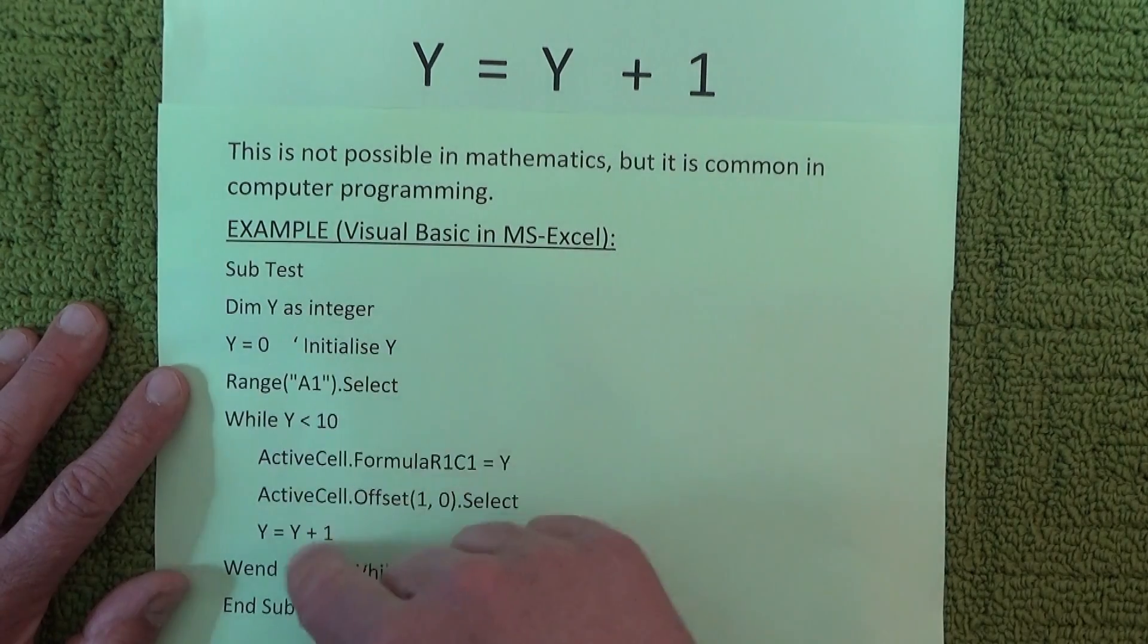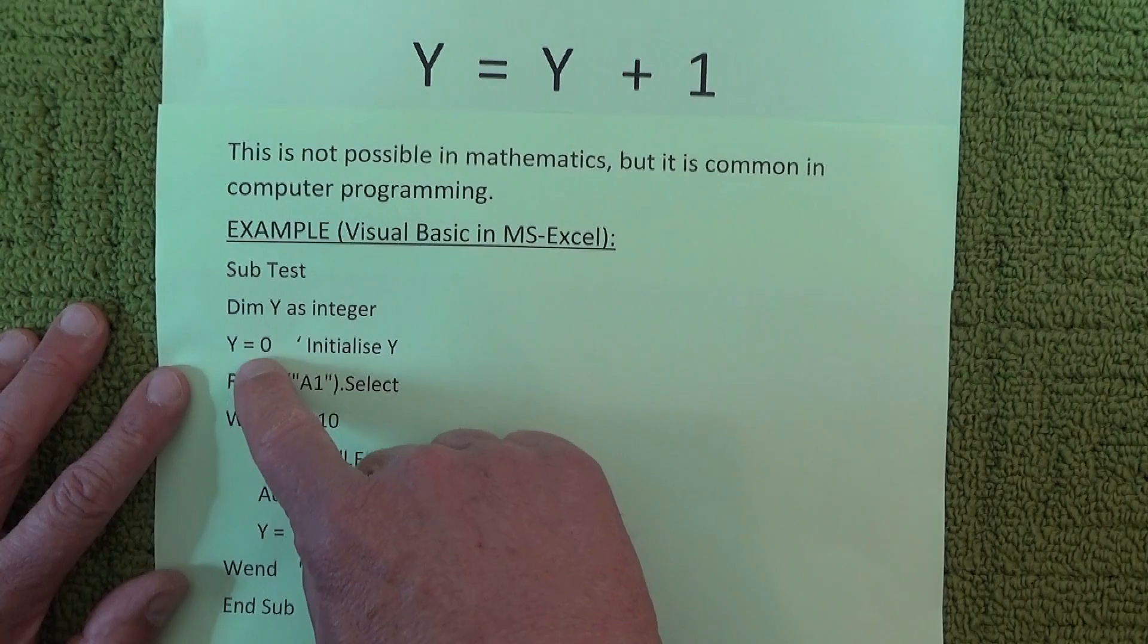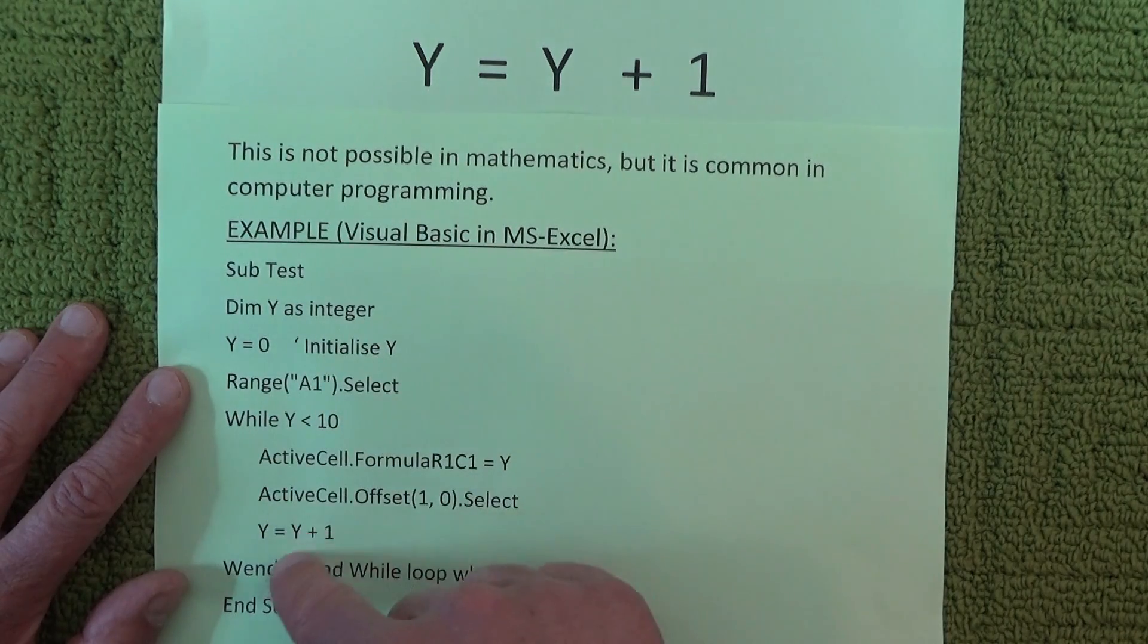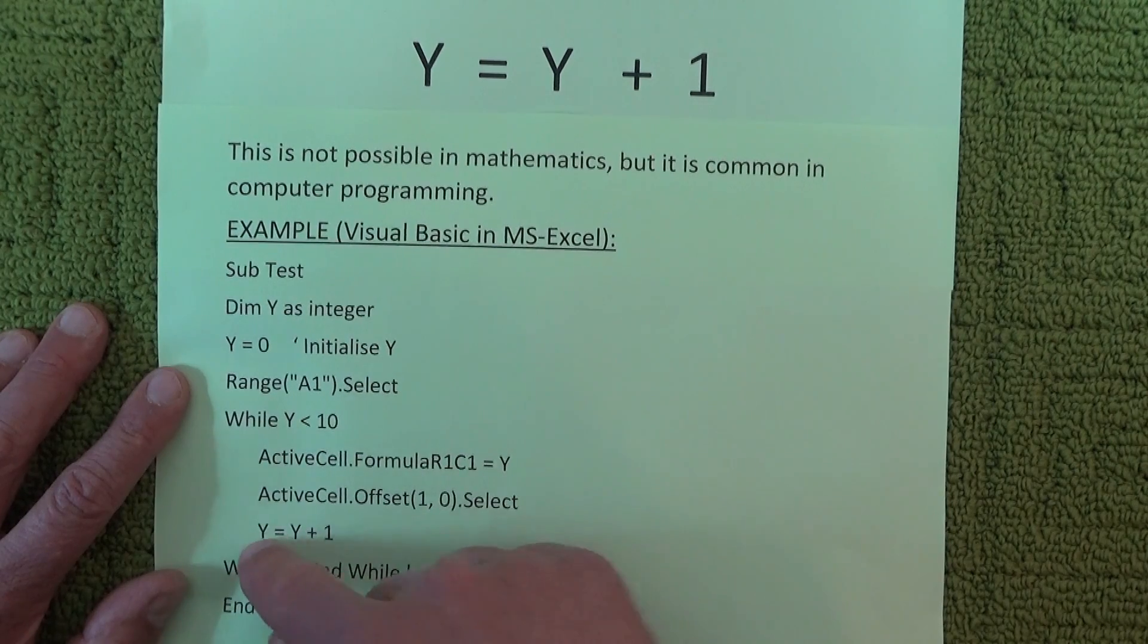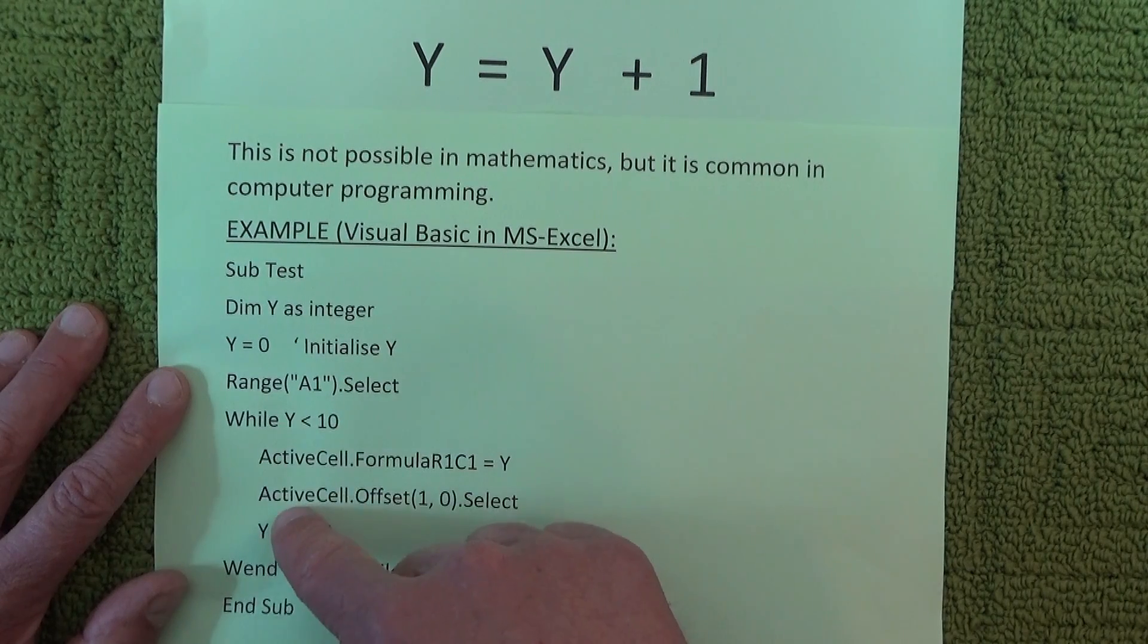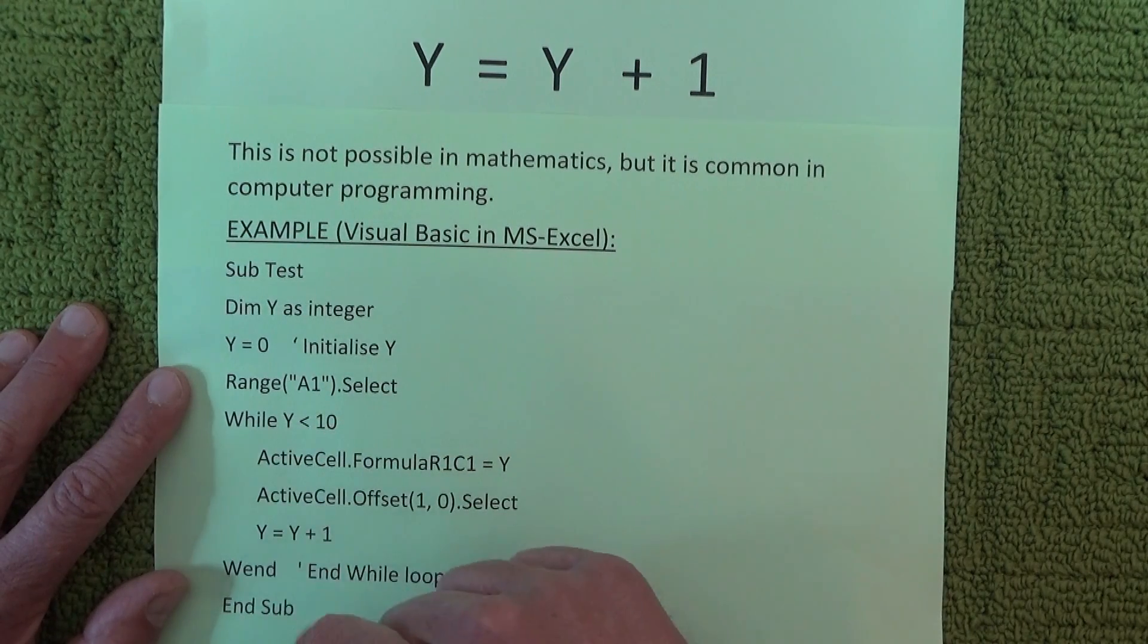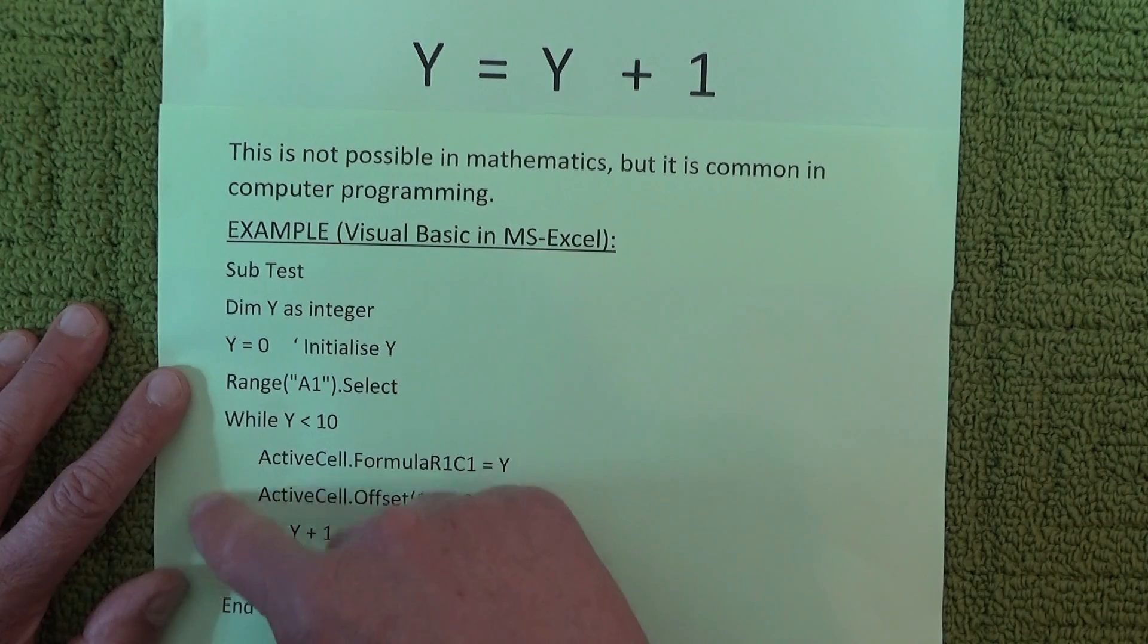And then we do this loop while ever Y is less than 10. And you can see down here every time Y goes through it, it increases by 1. So it starts off with 0, it goes first of all through the loop and it becomes 0 plus 1 equals 1. So Y suddenly becomes 1 and then it goes around again and then the next time because Y now is now 1 through this, now through the second time through the loop then Y equals 1 and 1 plus 1 is 2 and then Y becomes 2.